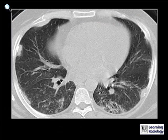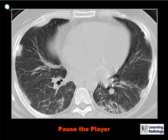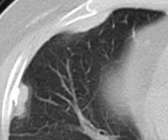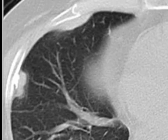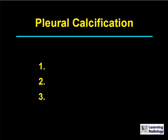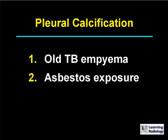Here's the next differential. The differential is pleural calcification. There are three main causes. The three main causes of pleural calcification are an old tuberculous empyema, asbestos exposure, or a hemothorax.